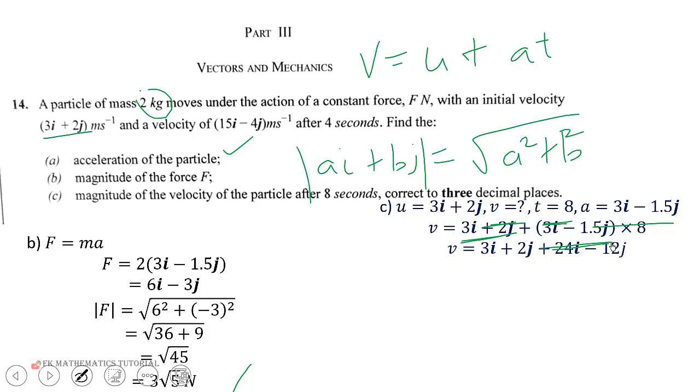When we multiply 8 times (3i - 1.5j), we get (24i - 12j). We group the i terms and j terms: 3i + 24i = 27i, and 2j - 12j = -10j. So v = (27i - 10j).